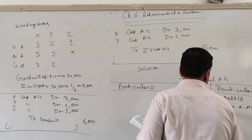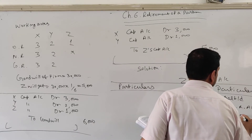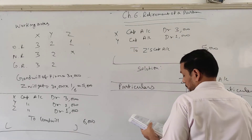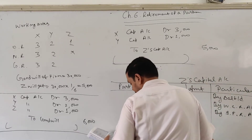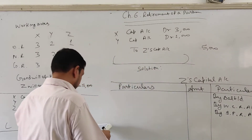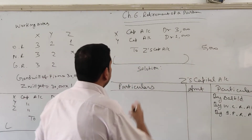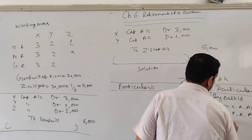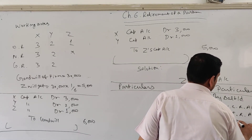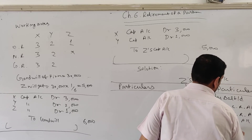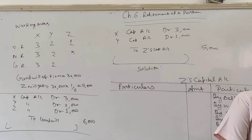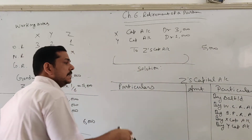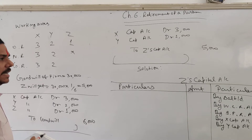Now give the share of goodwill credited by X capital and Y capital — Z is getting 3,000 from X and 2,000 from Y. The liability side of the balance sheet is now over; everything is distributed — WCR as well as IFR.